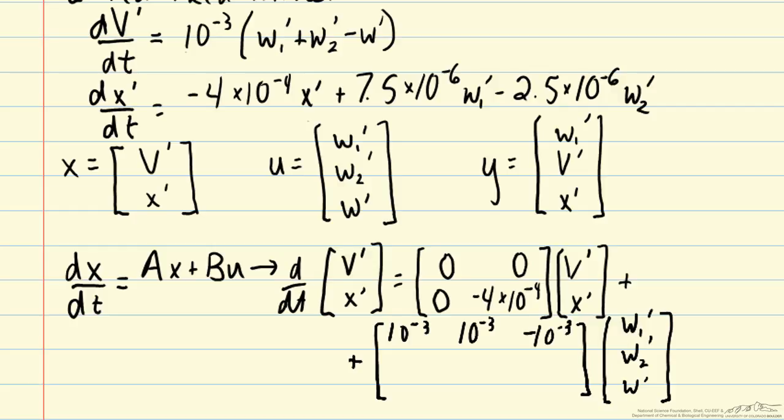And then our second row of B corresponds to our dX prime/dt equation. That first term X prime term already appeared in A but we do have terms for W1 prime. We have 7.5 times 10 to the minus 6. And the coefficient multiplying W2 prime is negative 2.5 times 10 to the minus 6. And then there is no coefficient multiplying W prime so we'll just put a zero there.